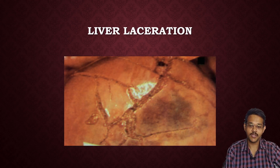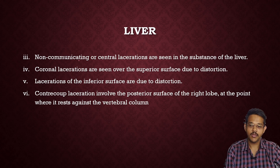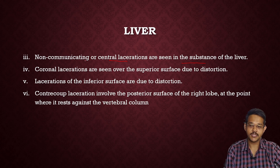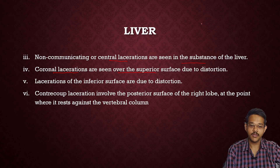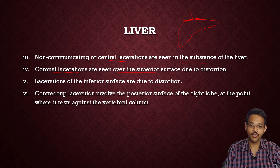This image shows liver laceration where the capsule and parenchyma are ruptured — a transcapsular injury. Non-communicating or central lacerations are seen in the substance of the liver, not communicating with the outside. Coronal lacerations are seen over the superior surface of the liver due to distortion.